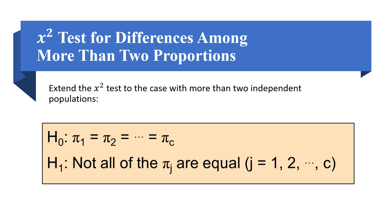To summarize the steps for testing independence of two variables: (1) construct the contingency table of observed frequencies; (2) formulate the null and alternative hypotheses; (3) construct the table of observed and expected frequencies; (4) calculate the chi-square test statistic; (5) identify the critical value at the specified significance level (0.05 in our example); (6) draw a conclusion by comparing the critical value to the test statistic.